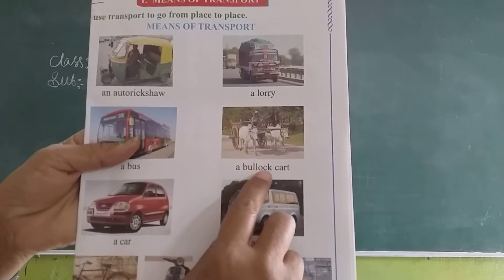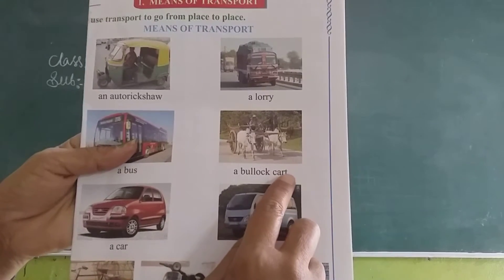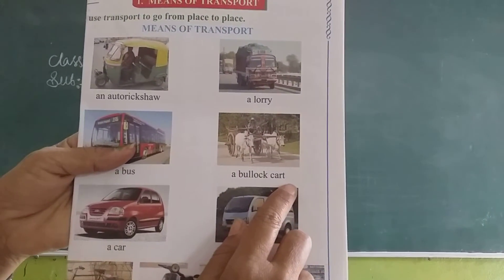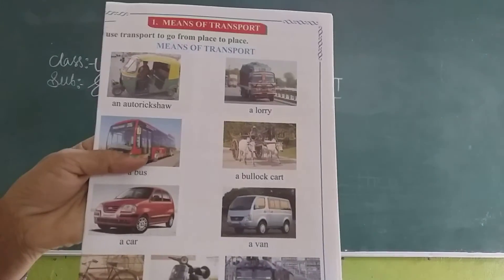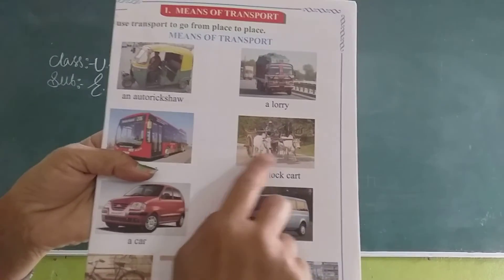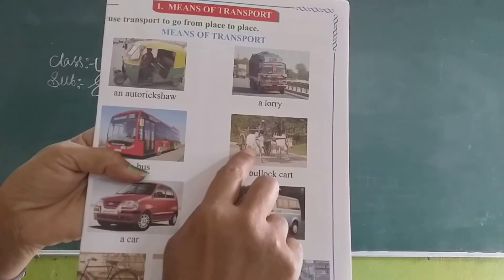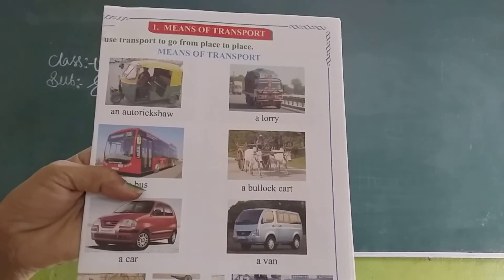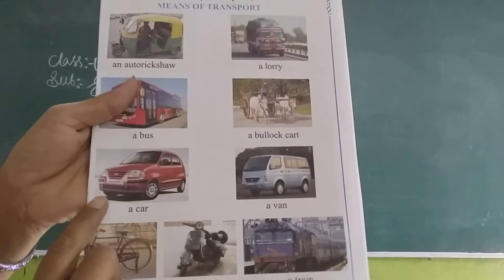Next one: Bullock cart. B-U-L-L-O-C-K C-A-R-T. Bullock cart. In the olden days, people used to travel from one place to another place by using animals — these are the ox. They used to travel from one place to another place.